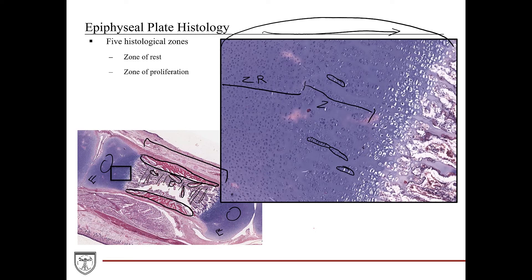Even closer still to the primary ossification center, we can appreciate that these lacunae containing the chondrocytes are starting to get larger, because the chondrocytes themselves are undergoing hypertrophy. As the chondrocytes become larger, the cartilage matrix between them starts to become condensed. So this area of the growth plate is called the zone of hypertrophy. Now even closer still to the primary ossification center is the zone of calcification. This is where the lacunae of the cartilage start to empty out, because the chondrocytes themselves are dying and the condensed cartilage matrix will start to become calcified. So this area is called the zone of calcification.